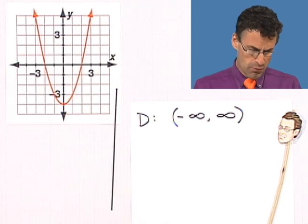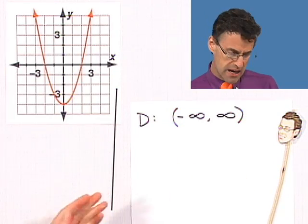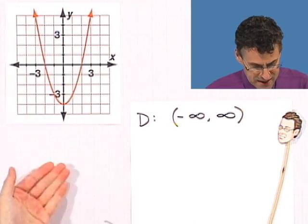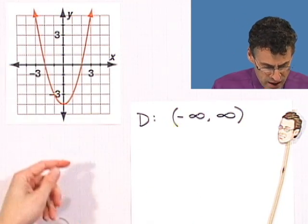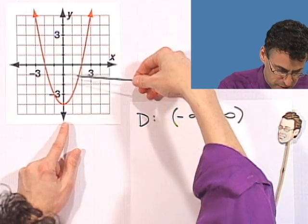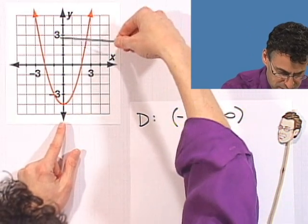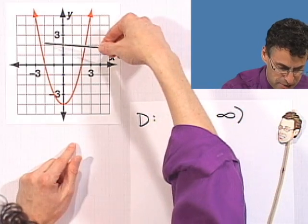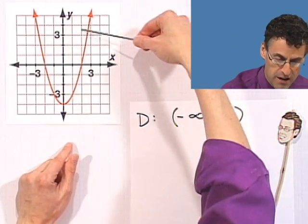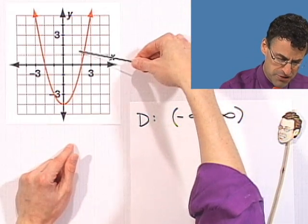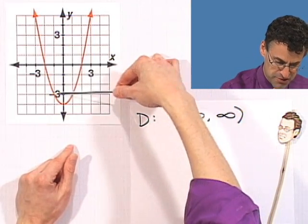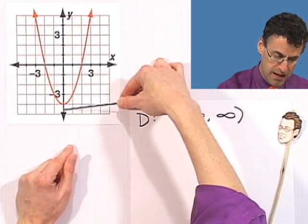Now what about the range? The range asks what y values are attained. You want to look at the y-axis and ask what y values are actually going to be used. You see that all these y values here are used somewhere — either this side or that side of the graph. It goes higher and higher up forever. But as you come down, these y values are met, all the way down to negative four.